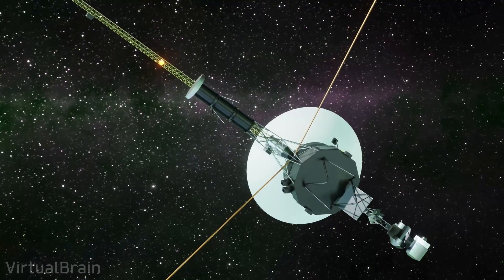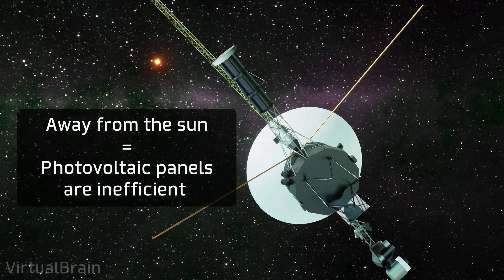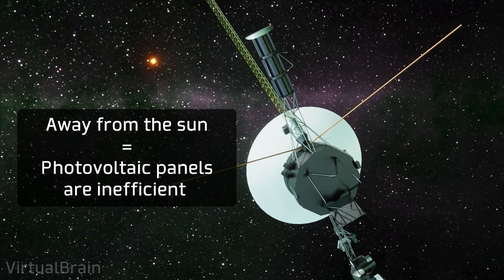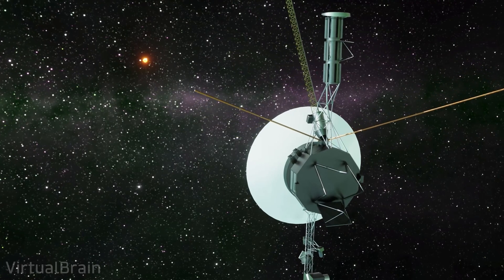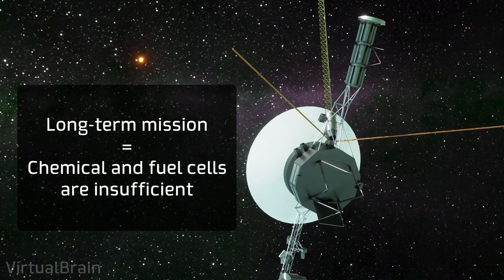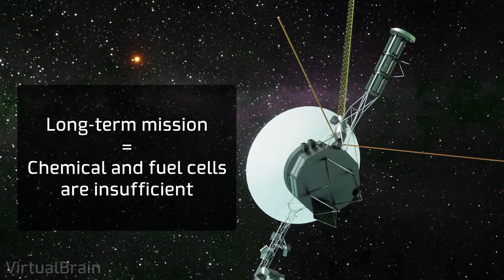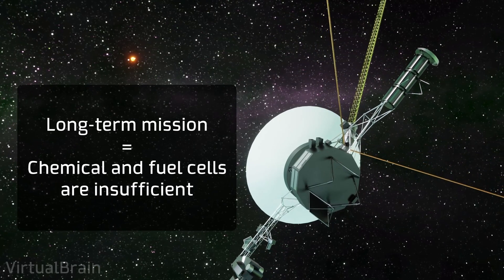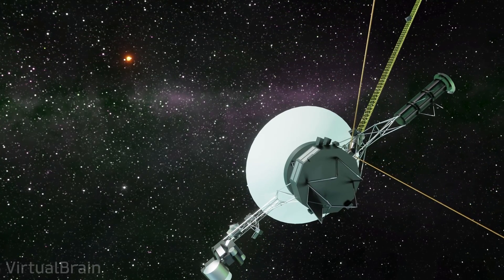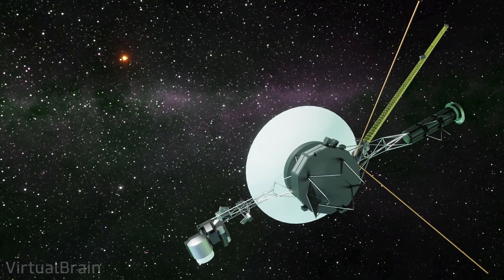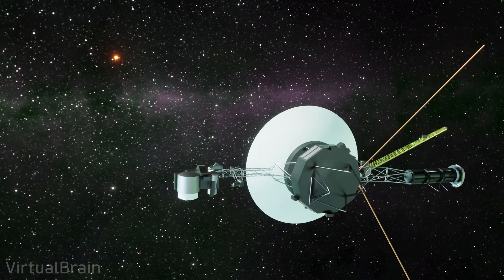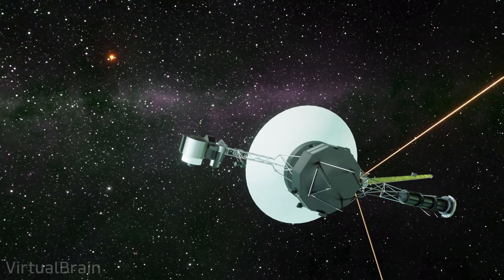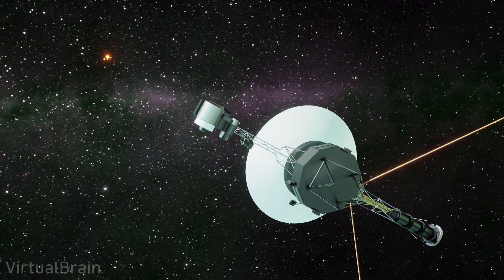At such a great distance from the sun, the amount of light the probes receive is so small that it would be impossible to generate the energy needed to operate them using photovoltaic panels. And at the same time, due to the long mission duration, the use of fuels or chemical cells was not feasible either. Because of these limitations imposed by the context of use, the radioisotope thermoelectric generator was the only viable option to keep the probes running.